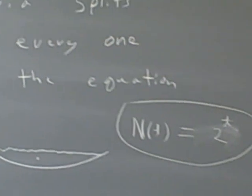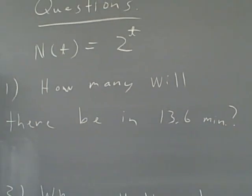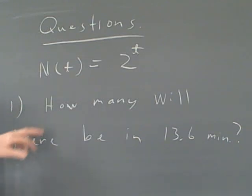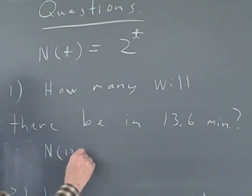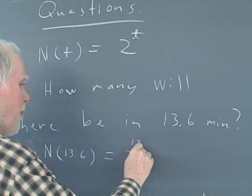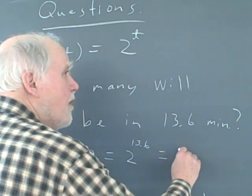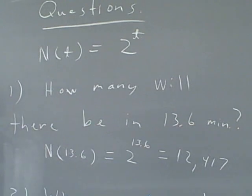Now let's answer a couple of questions using this equation of growth for the bacteria in the petri dish. We want to know: how many will there be in 13.6 minutes? We use functional notation and put 13.6 in for time: N(13.6) = 2^13.6. If you put that in your calculator, you get approximately 12,417 bacteria in 13.6 minutes.